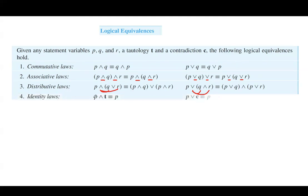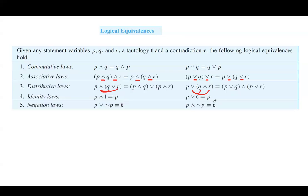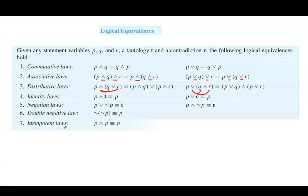Identity law says P AND tautology is the same as P, and P OR contradiction is also the same as P. Negation laws: P OR NOT P is a tautology, and P AND NOT P is a contradiction. Double negation law: the negation of the negation of P is the same as P. Idempotent laws: P AND P can be replaced by P, and P OR P can also be replaced by P.